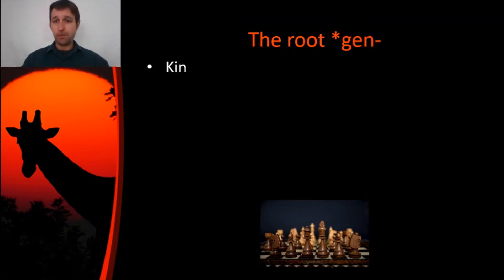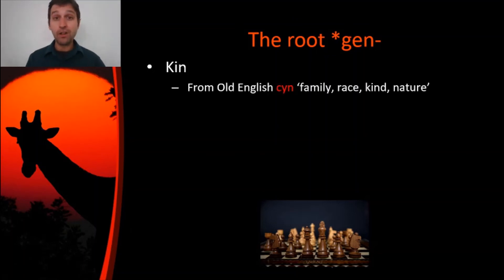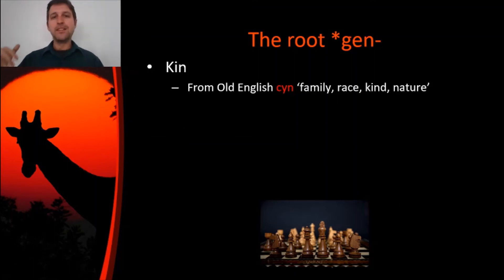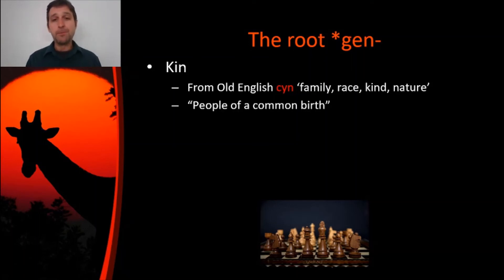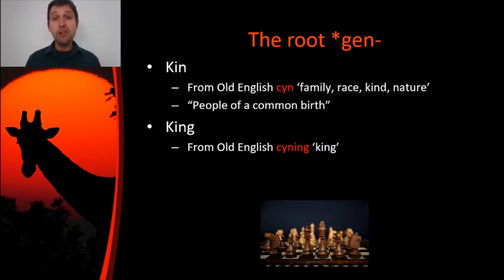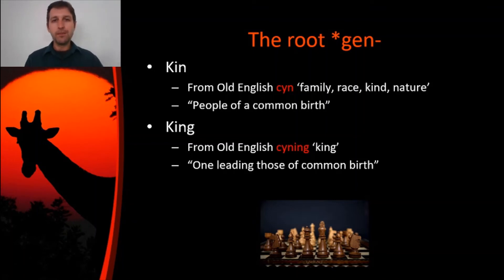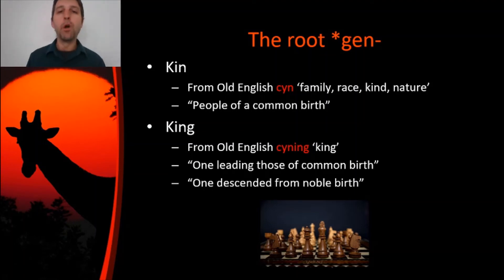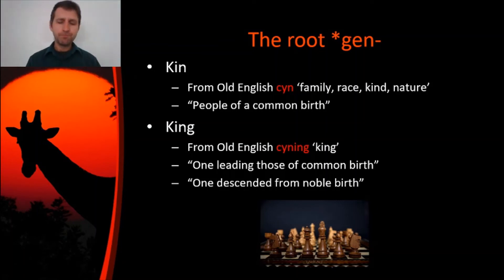Here's one right now: our word kin actually just comes from the root Gen. The N is still the same, the vowel has changed a little bit, but the big difference is the G has become a K. The meaning has really not changed much at all — you can't unsee it once you see it. We get our word kin from the Old English word cyn, which means family, race, kind, nature. Really any of those things we've been looking at so far. It just means people of a common birth. What about king? It comes from Old English cyning, and there are two possible etymologies, both having something to do with birth or belonging — it could mean somebody belonging to the group and leading those of common birth, or one descended from noble birth.